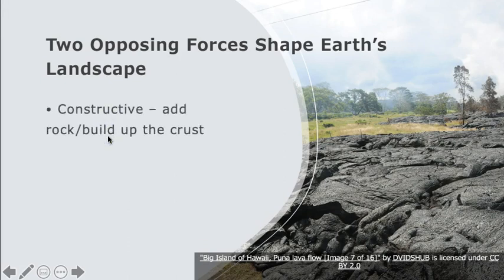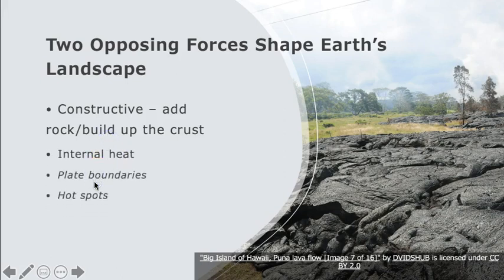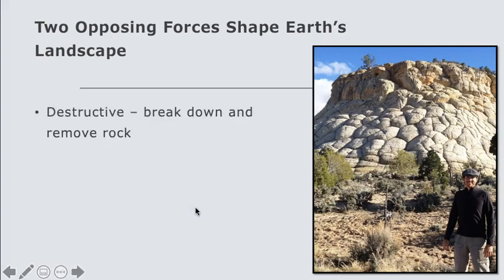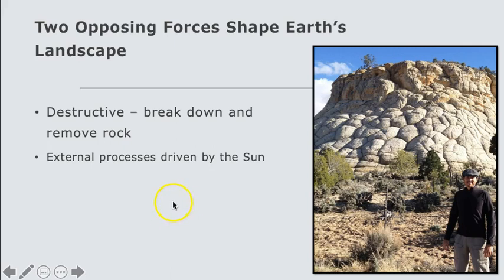Constructive processes are driven by Earth's internal heat, which causes volcanic activity and mountain building along plate boundaries and hotspots. Destructive geologic processes act in opposition to constructive geologic processes because they break down and remove rock, shaping and lowering the landscape in the process. Most of these external processes operate on or near Earth's surface using energy from the sun and include weathering, mass wasting, and erosion.